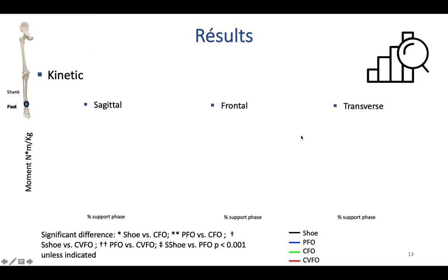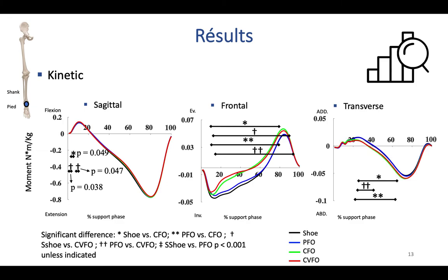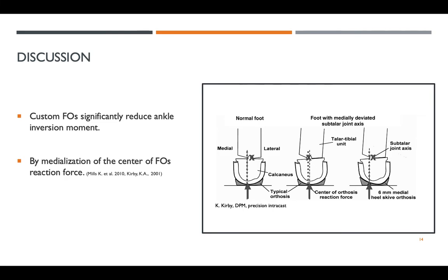Our main results are that custom foot orthoses decrease ankle inversion moment compared to the prefabricated and shoe conditions. Custom varus foot orthoses had an effect over a longer period of the stance phase compared to custom orthoses, so the custom varus orthoses had a better effect. In the sagittal plane we found minor effects, and in the transverse plane, custom orthoses increased ankle abduction moment.